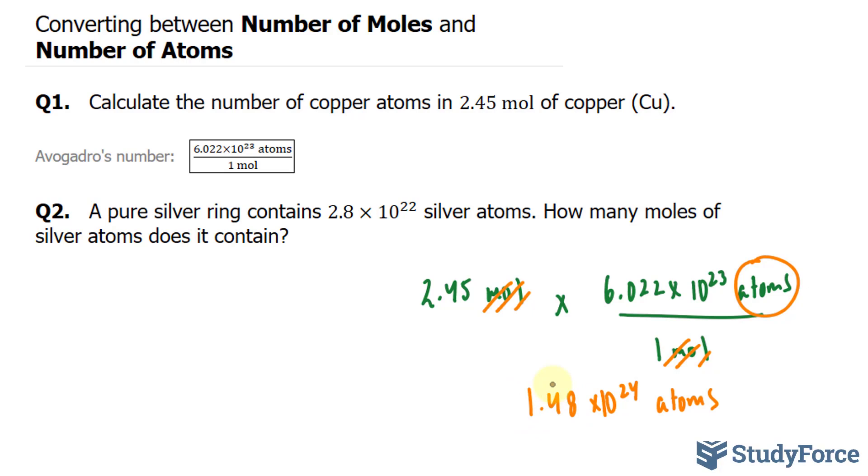Let's move on to question 2. In question 2, we have a silver ring which contains 2.8 times 10 to the power of 22 atoms. How many moles of silver atoms does it contain?